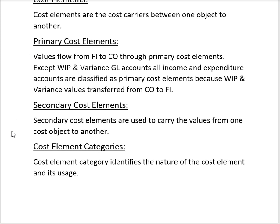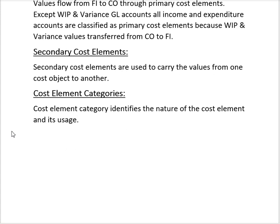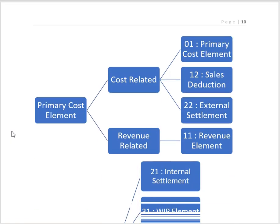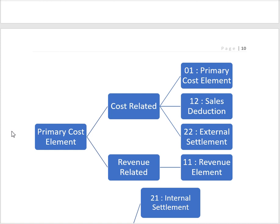Cost element categories identify the nature of the cost elements and their usage — meaning where a cost element is going to be used. Multiple cost element categories are defined, and these are segregated into primary cost element categories and secondary cost element categories.